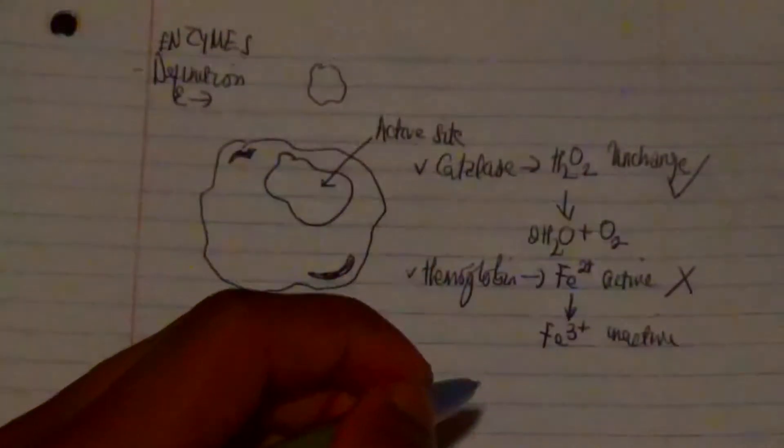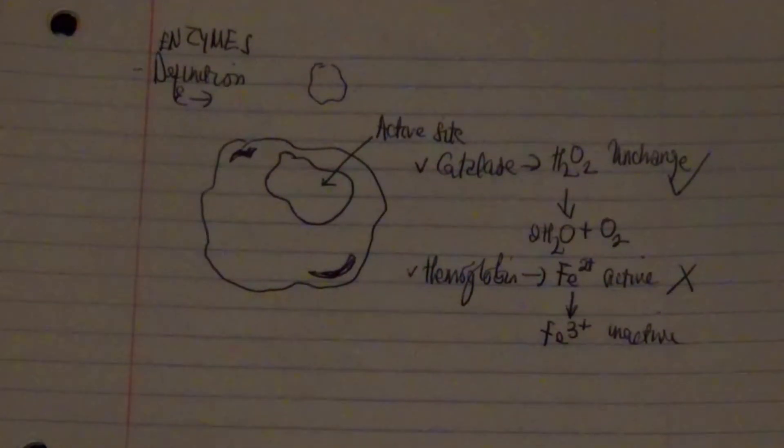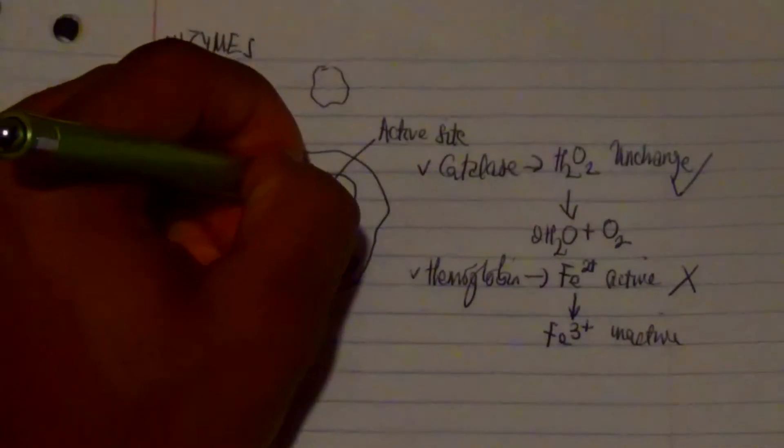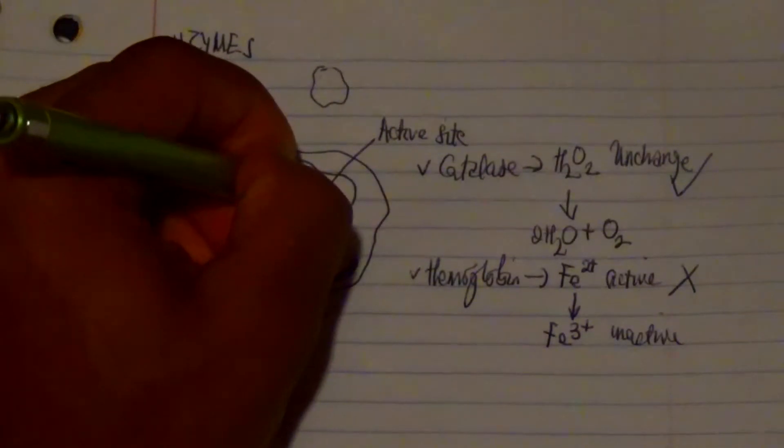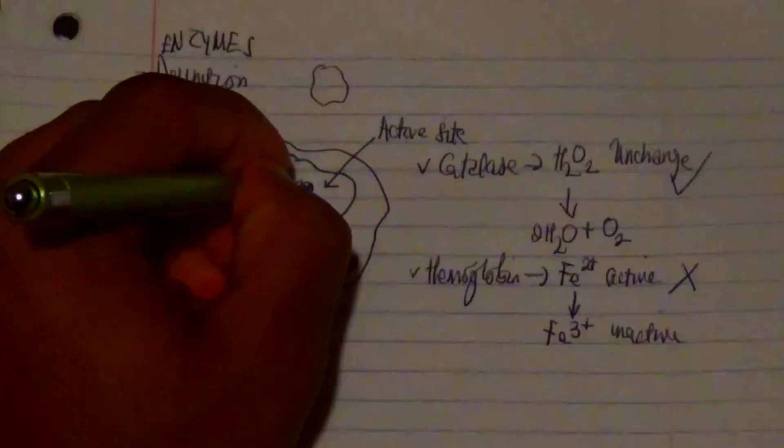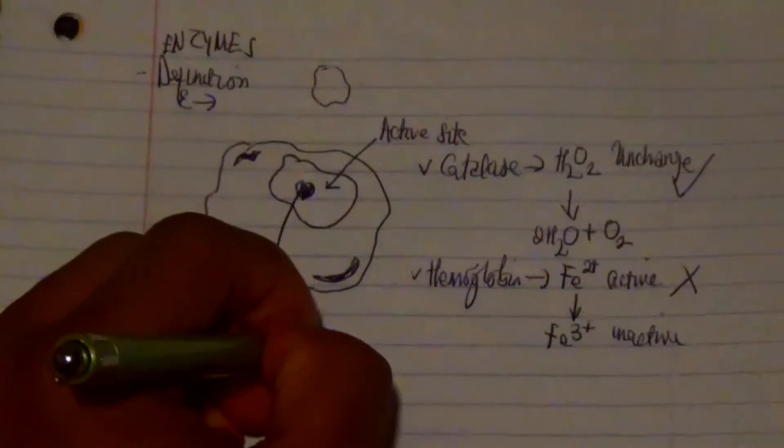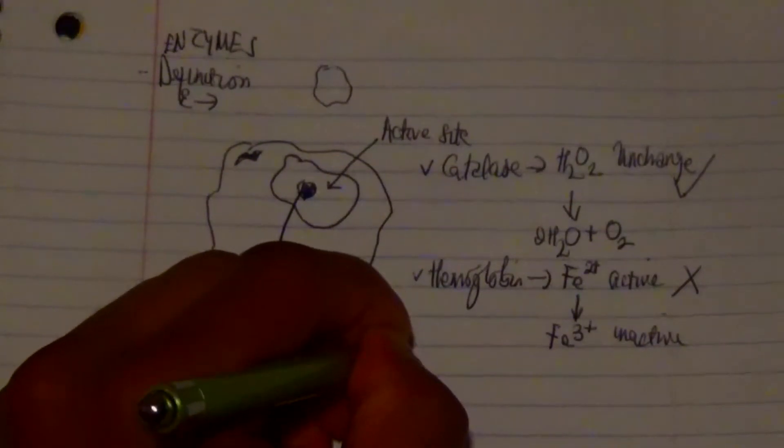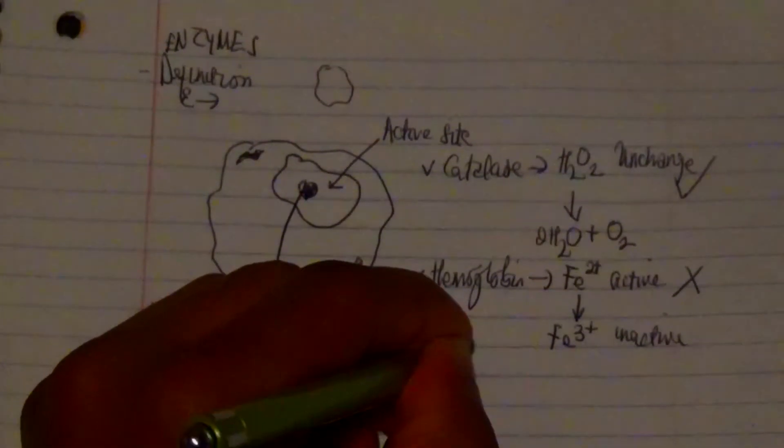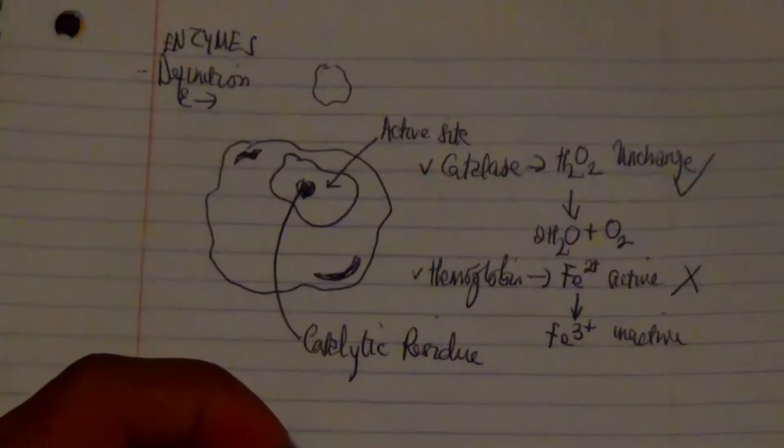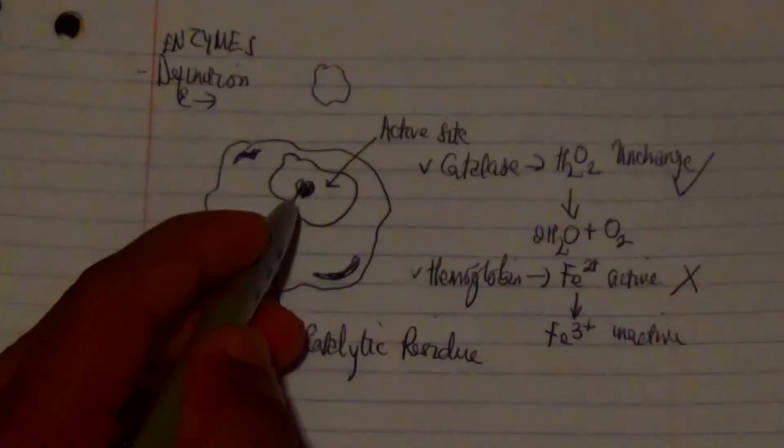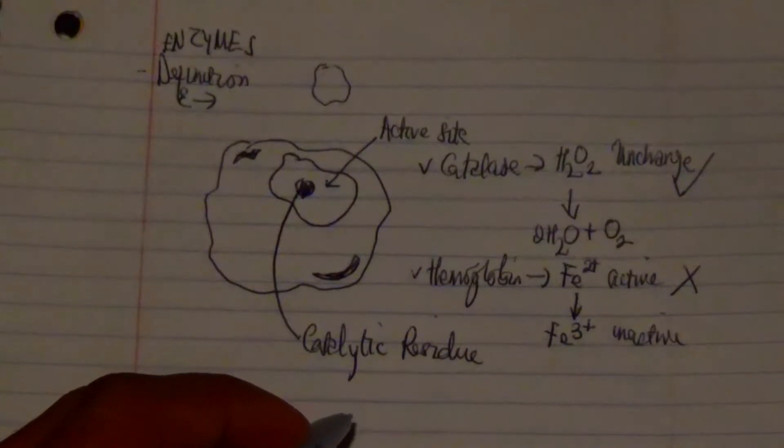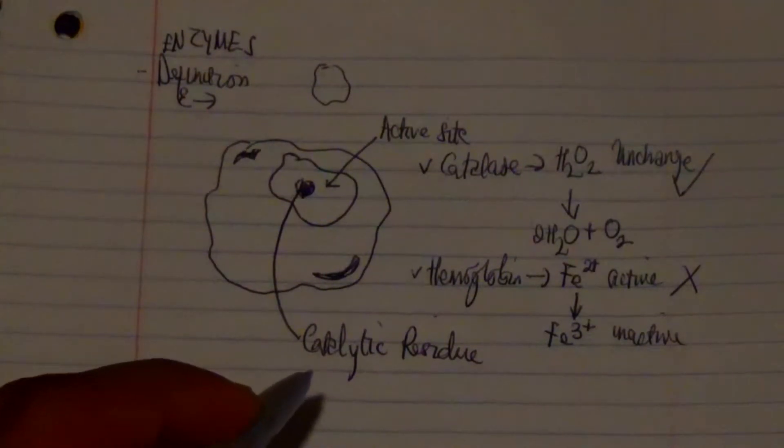Now let's talk about a particular site called a residue in this particular catalysis. Let's say for this example, this particular region I call it a catalytic residue. What is a catalytic residue?